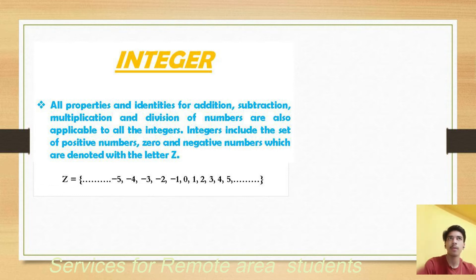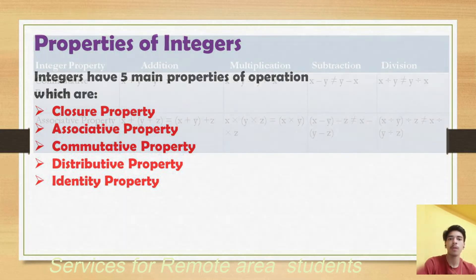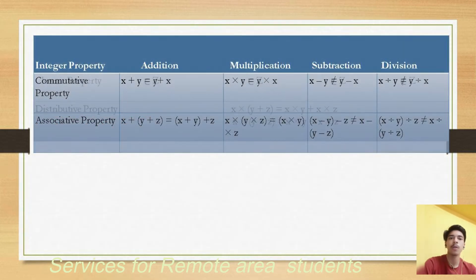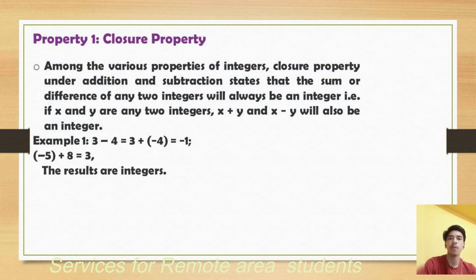I am taking integers from minus five to five, written as Z equals curly bracket: minus five, minus four, minus three, minus two, minus one, zero, one, two, three, four, five. Integers have five main properties of operation, which are: closure property, associative property, commutative property, distributive property, and identity property.